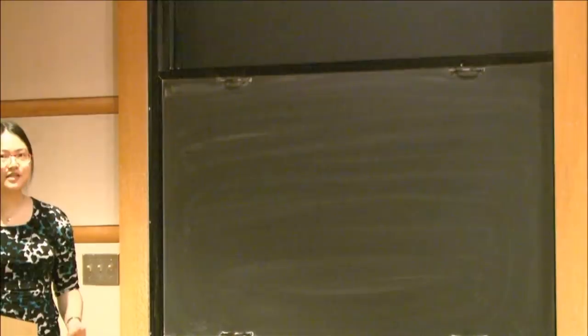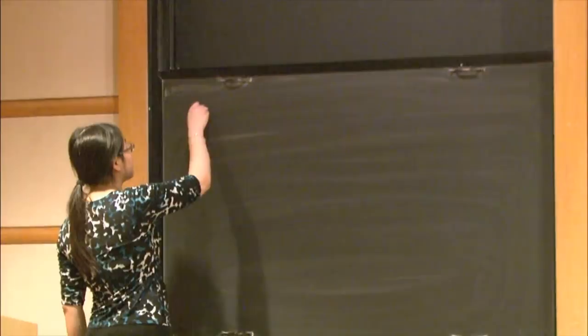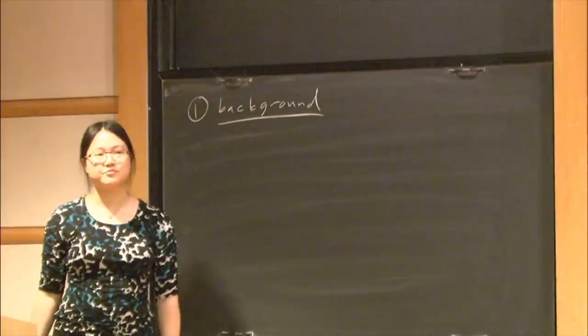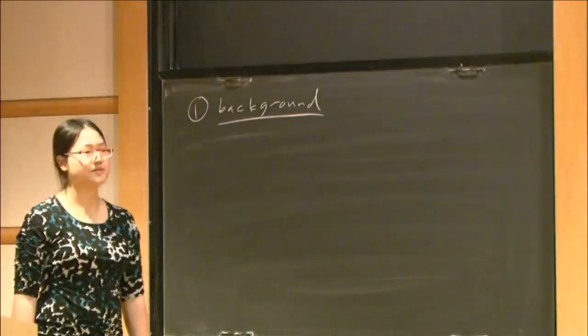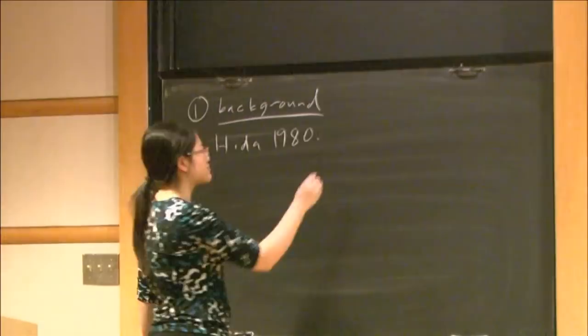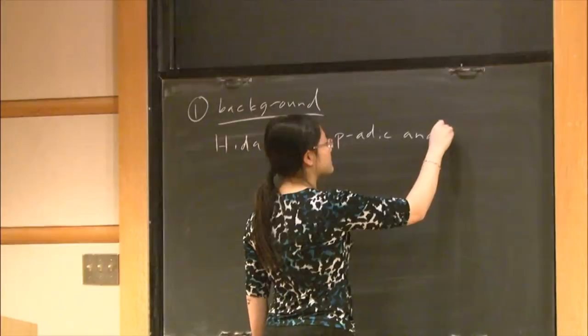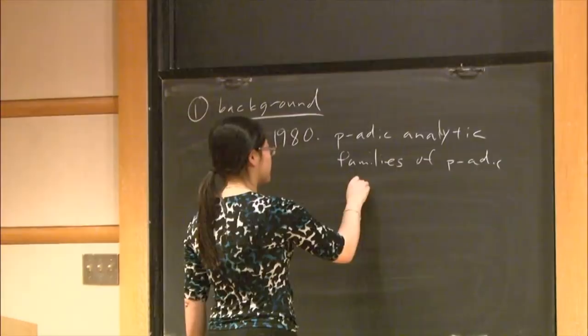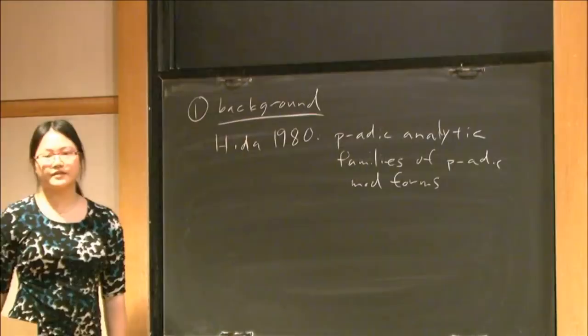Thank you for the invitation. This talk is about eigenvarieties. I wanted to start with a little background on the development of the subject. Very generally speaking, the idea is that we want to keep track of p-power congruences between coefficients of automorphic forms. Hida, around 1980 or so, was the first person to suggest that you might do this by constructing p-adic analytic families of p-adic modular forms, which he did in a special case.